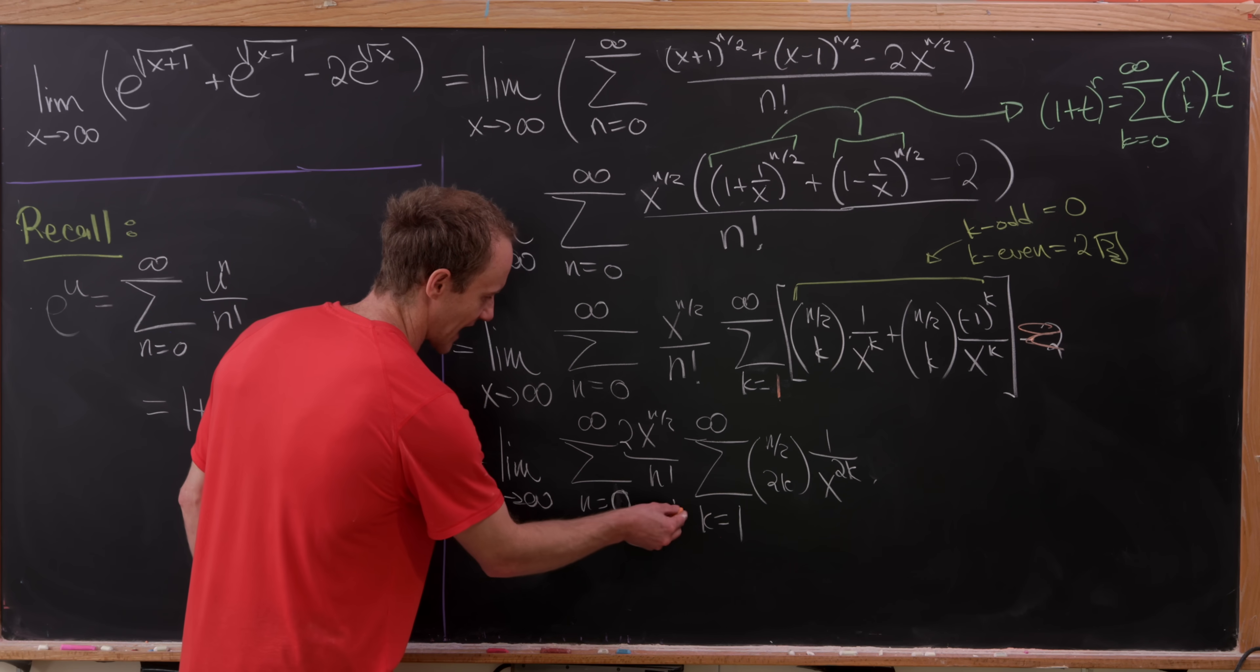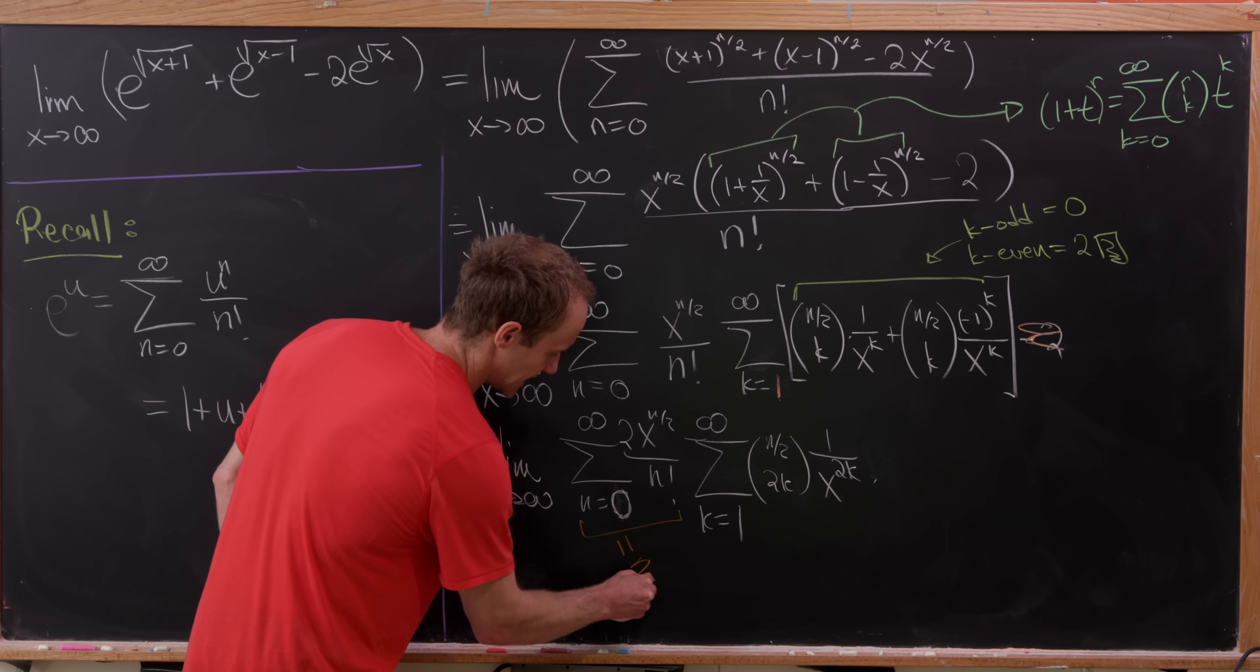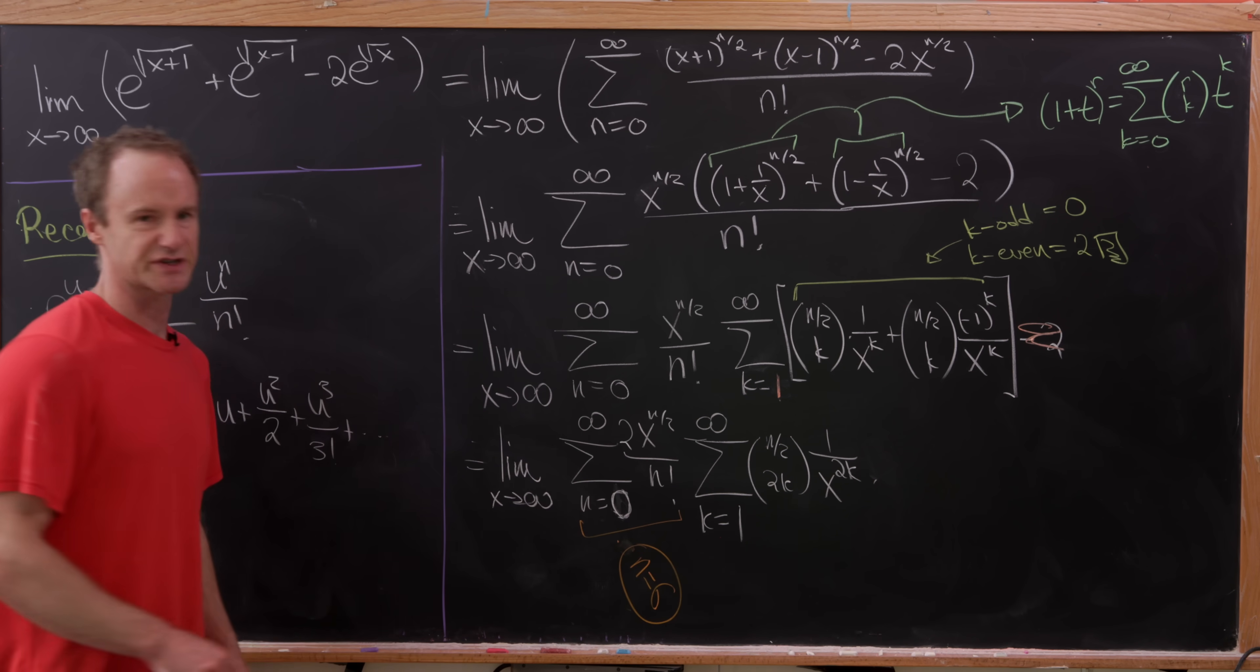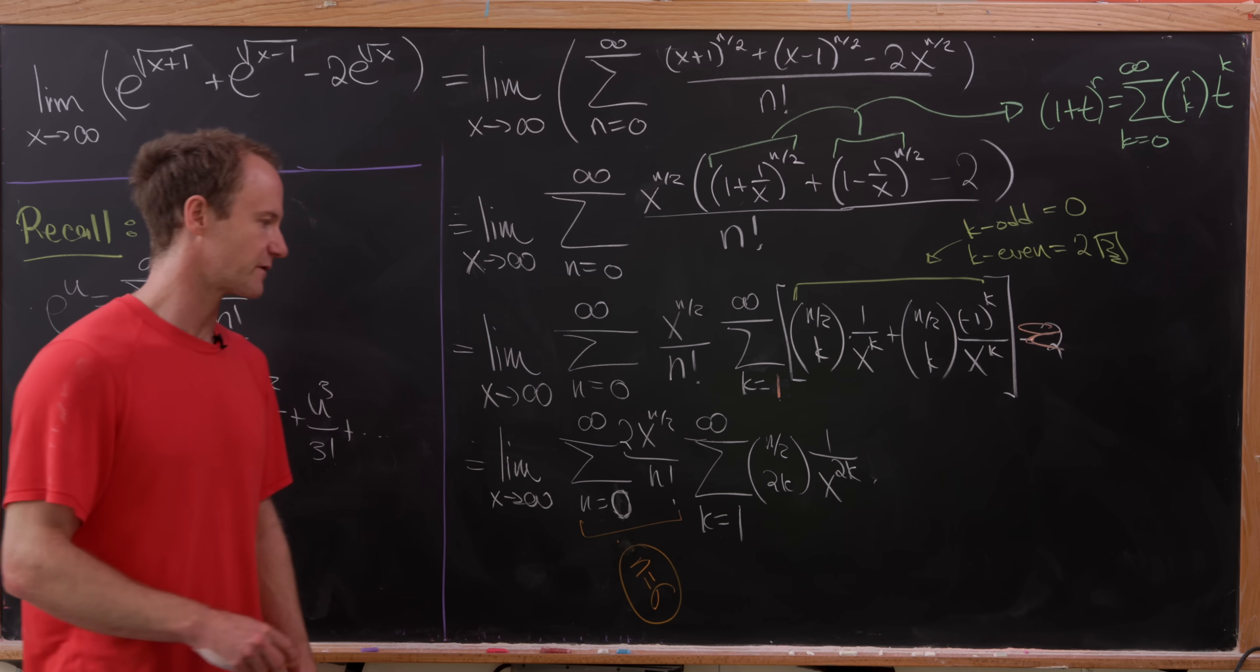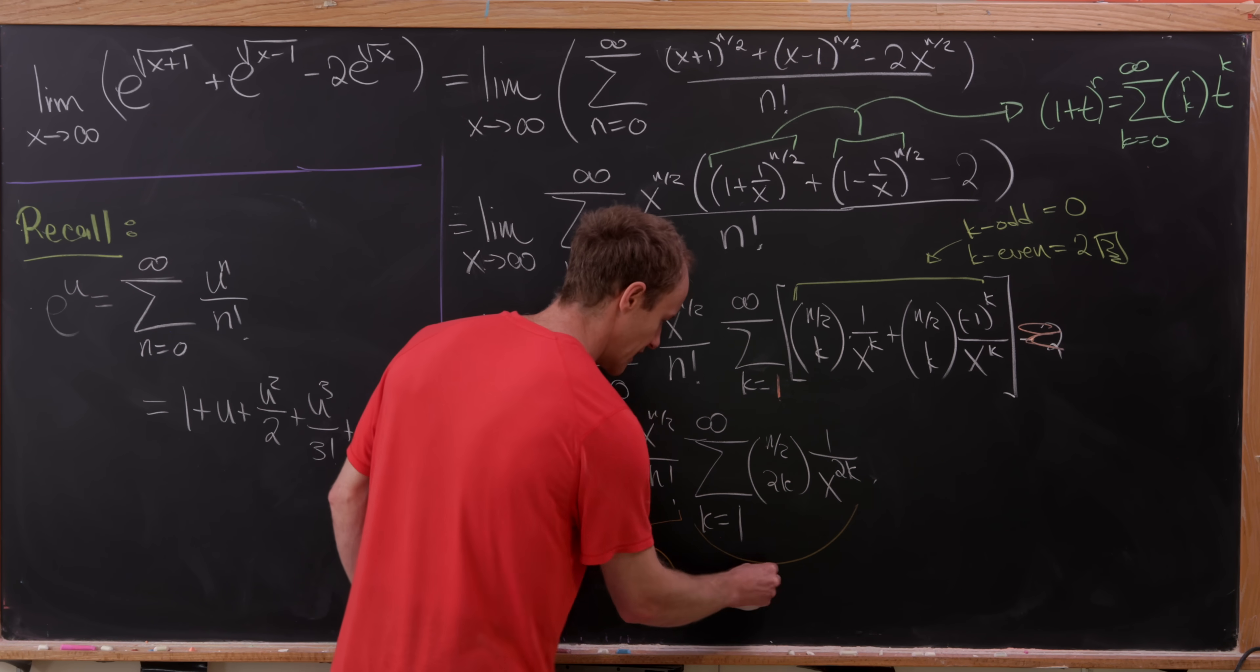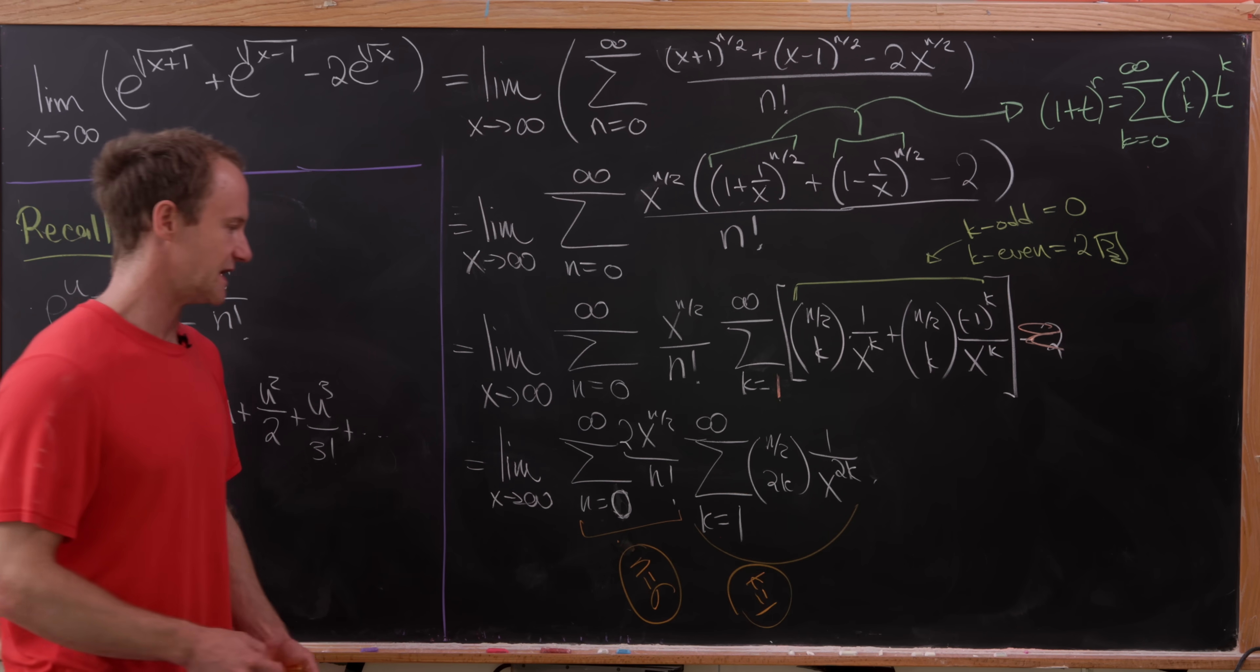Let's maybe extract a certain term from this. Maybe an n equals, well, let's extract an n equals 6 term just for the sake of a choice. And then notice if n is equal to 6, k is still going from 0 to infinity. So we might as well take out a k equals 1 term from the choice when we take out an n equals 6.